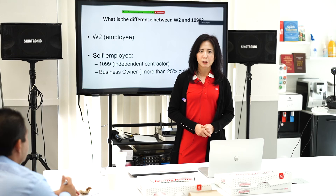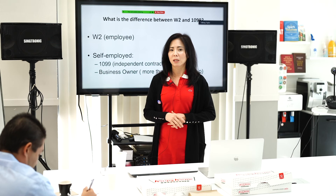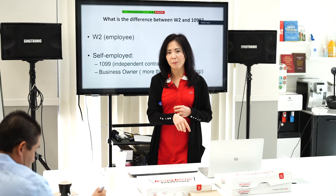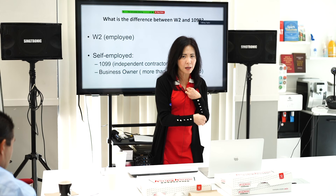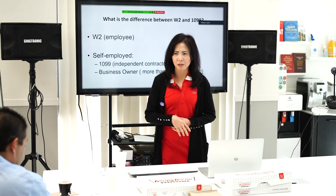Under the self-employed category, there is also a business owner category. But for people who apply for a mortgage and want to use their business owner income, that owner has to own at least 25% ownership of the business — so more than 25%.